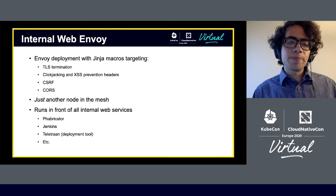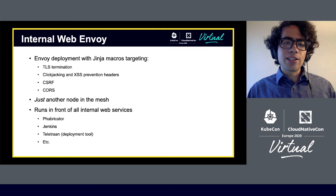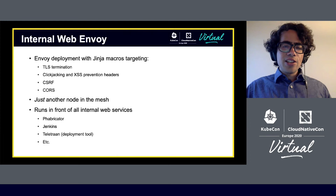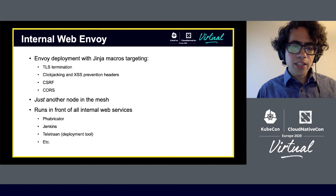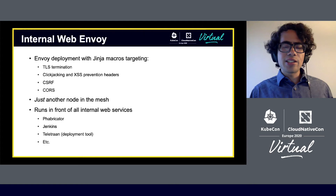The key idea here is that Internal Web Envoy, while being a really cool pattern and deployment strategy, is really just another node in the mesh. It's not a unique case that we need to cater to — we simply need to write the configuration DSL for it and treat it like any other node, deployed to a host with an arbitrary configuration. This now runs in front of all our major web services, including open source software such as Fabricator and Jenkins, as well as a variety of internal web services.